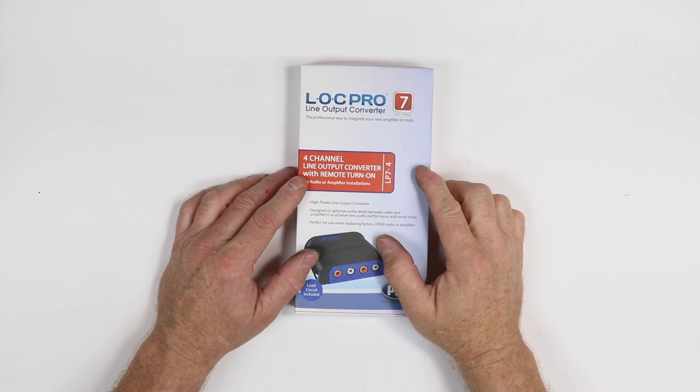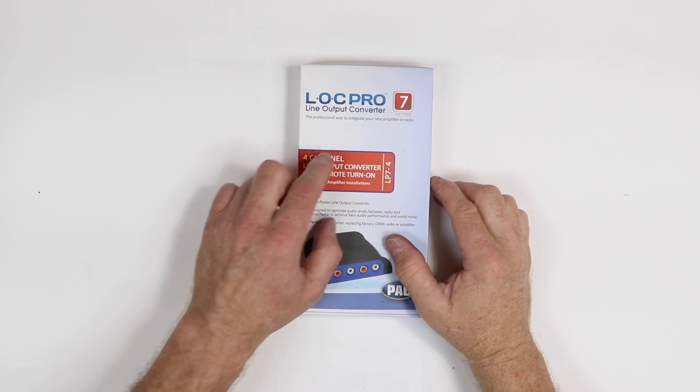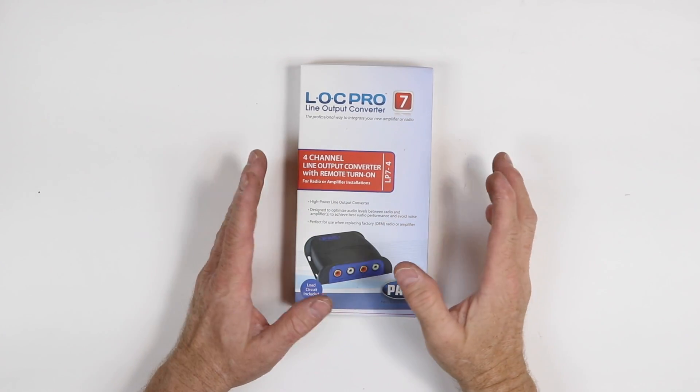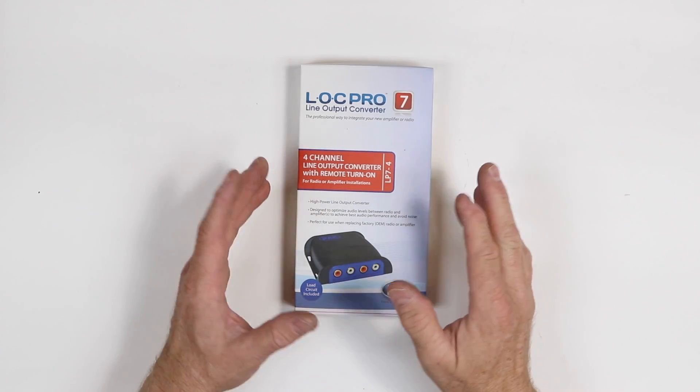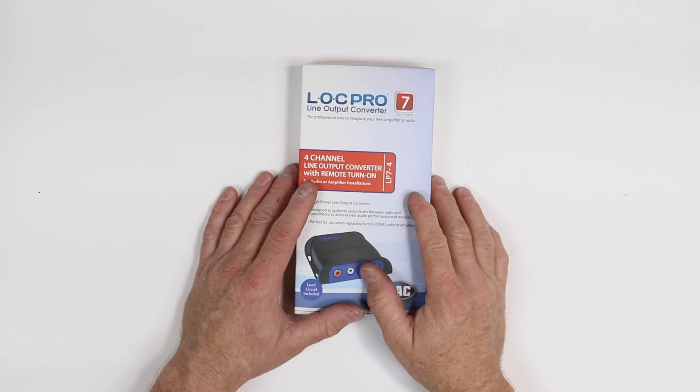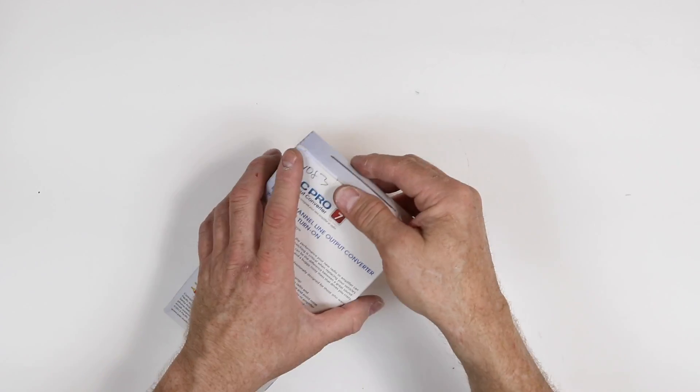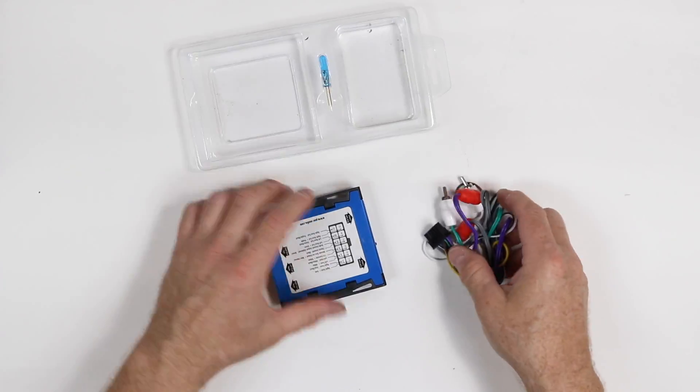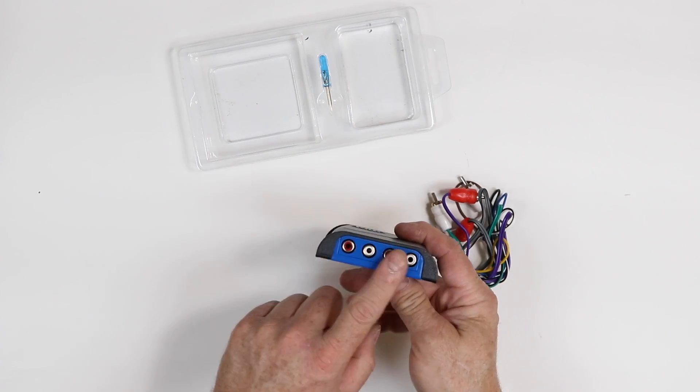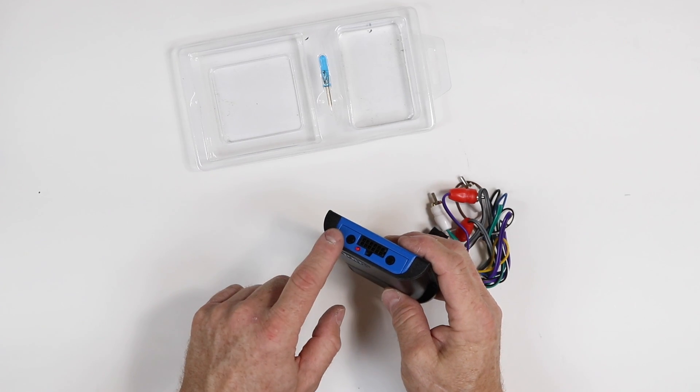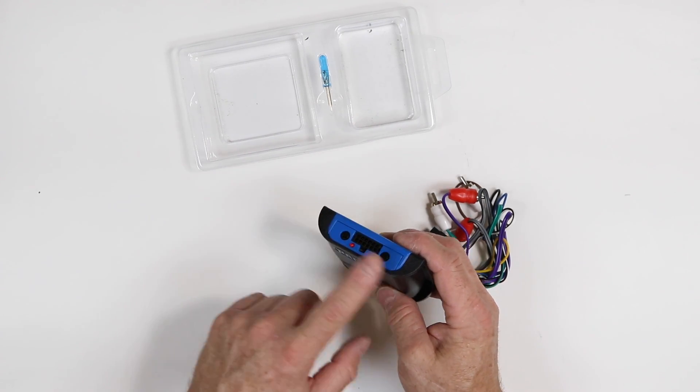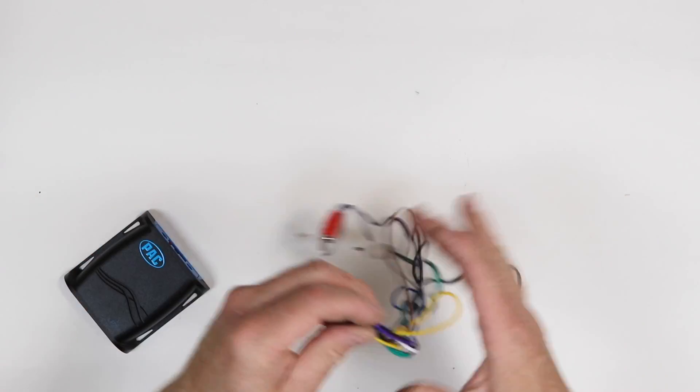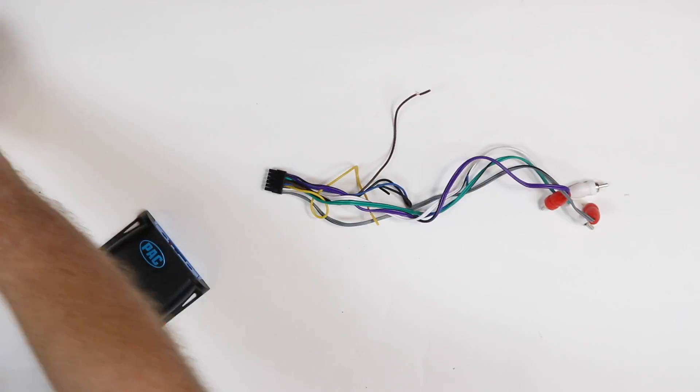So what we want to start with is this guy right here, the PacAudio LOC Pro 7 or the LP7-4. Now this is a four channel high level to low level adapter, but it's going to allow us to do the summing we need inexpensively. So let's open it up and take a look at it. In the box, you'll get the four channel converter, has RCAs on one end, power plug on the other, front and rear gain controls. There's a little tiny gain screwdriver right here, and then we have the harness itself, and of course the instructions.